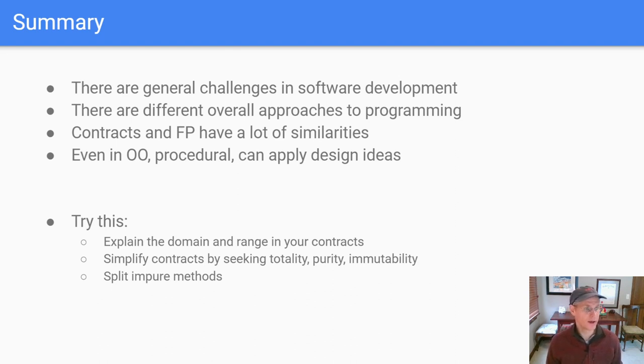So here's what I'd recommend. Think about the domain and range for each of your contracts and make sure that you have thought through it and you have deliberately either included that or not included that. That is, don't make mistakes. You may choose to under-specify if you want to. You want to go through and simplify your contracts, and you can do that by seeking totality, purity, and to some extent immutability. And then finally, if you do have impure methods, consider splitting them because you're going to have an easier time with the pure part, being able to test it and specify it.